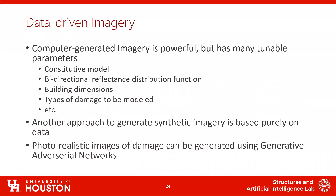The second part of my presentation is about data-driven imagery. Computer-generated imagery is powerful, but it has many tunable parameters which can make generating images challenging. For example, you can have different constitutive models, different bi-directional reflectance distribution functions describing how light reflects off buildings, different building dimensions, different types of damage to model, et cetera. So another perhaps simpler approach would be to generate synthetic imagery based purely on data. Thanks to advances in deep learning, this is now possible — photorealistic images of damage can be generated using generative adversarial networks.